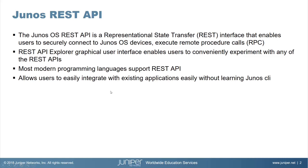Junos OS REST API is a representational state transfer interface that enables users to securely connect to Junos devices and execute remote procedure calls. Junos devices also come with a REST API Explorer, which can be configured to enable users to conveniently experiment with any of the REST APIs. Most programming languages these days support REST API integration, so this allows programmers to easily integrate with existing applications without learning Junos CLI.